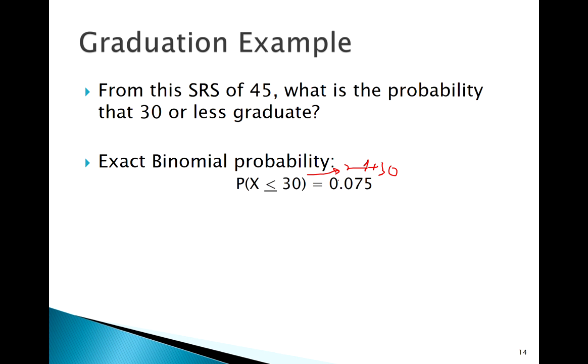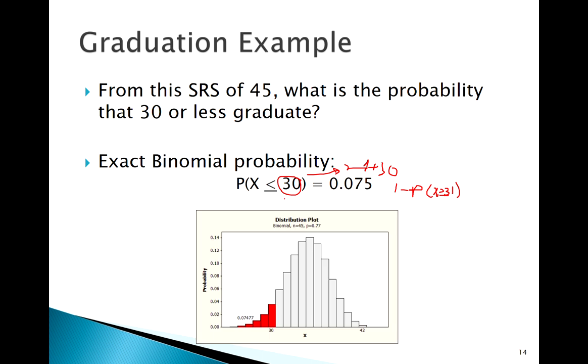Sometimes something that can help us do things by hand is try to use the complement rule. Well, I could flip this around. I could say less than or equal to 30 is 1 minus greater than or equal to 31. But is that really helpful? Because greater than or equal to 31 is 31, 32, 33, 34, all the way through 45. Since this x value is kind of in the middle of 0 and n, there's no really easy way to do this except to use this approximation.